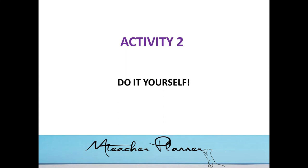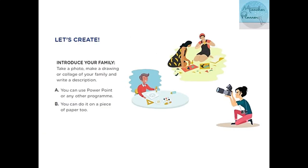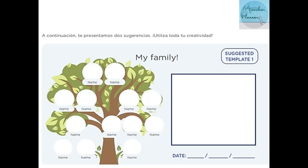Activity two: Do it yourself. Now we're going to start with our creation. The platform says: 'Let's create — introduce your family.' Take a photo, make a drawing or collage of your family and write a description. Option A: you can use PowerPoint or any other program. Option B: you can do it on a piece of paper. Use all your creativity.